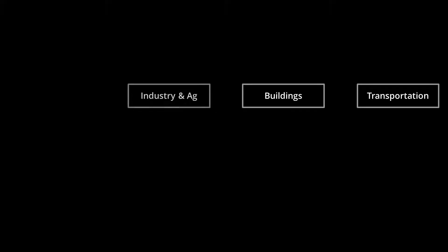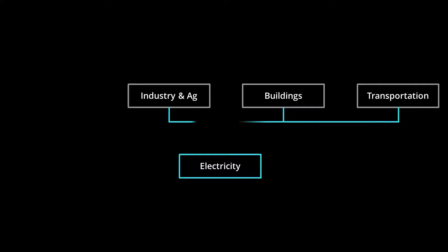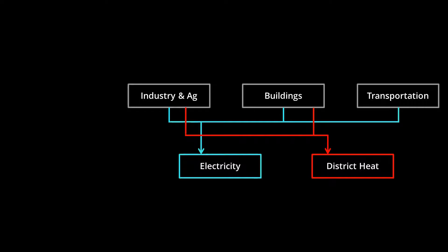Next, we'll take a look at the high-level structure of the EPS. Four of the largest components are the transportation, buildings, industry, and electricity sectors. The first three are the demand sectors because they demand energy, including electricity, and they tell the electricity sector how much power to produce, accounting for transmission and distribution losses. Like electricity, district heat is an energy carrier — hot water or steam that is generated at a central facility and pumped to nearby buildings.